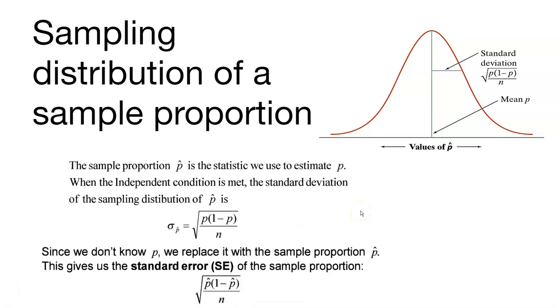Since we often don't know what p is, we'll often replace it with the sample proportion, p hat. This gives us the standard error of the sample proportion. All we're doing is we're replacing p, because we don't know what p is, with p hat. So we're going to use a standard error here in this calculation.